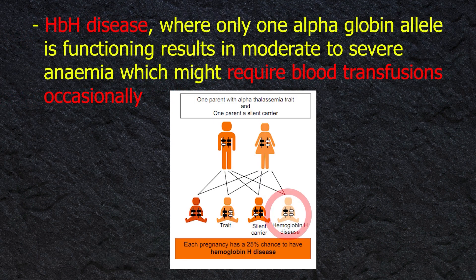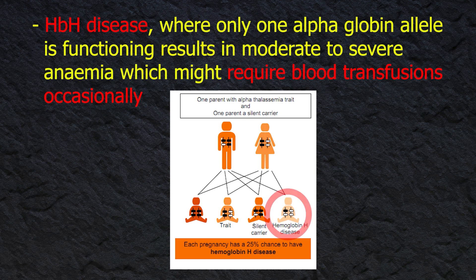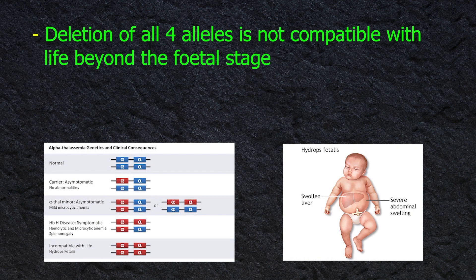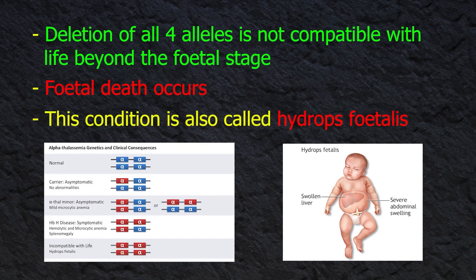Alpha thalassemia trait is usually a symptomless condition requiring no treatment. Hemoglobin H disease, where only one alpha globin allele is functioning, results in moderate to severe anemia which may require occasional blood transfusions. Deletion of all four alleles is not compatible with life beyond the fetal stage — fetal death occurs, a condition called hydrops fetalis. Unlike beta chains, alpha chains are part of both hemoglobin A and hemoglobin F, so it affects fetal stages of life as well.